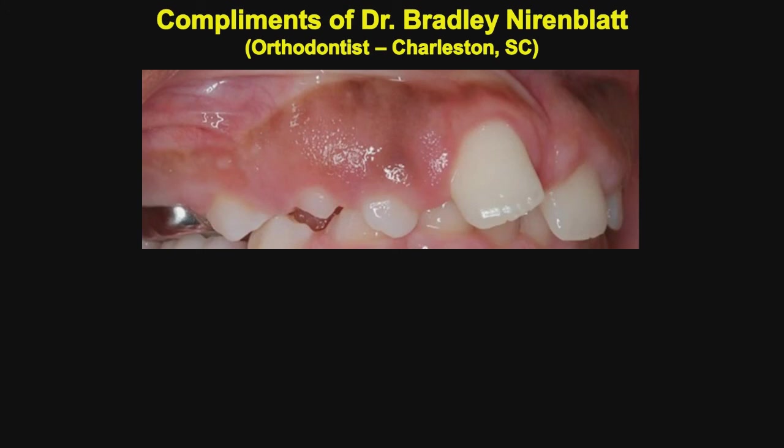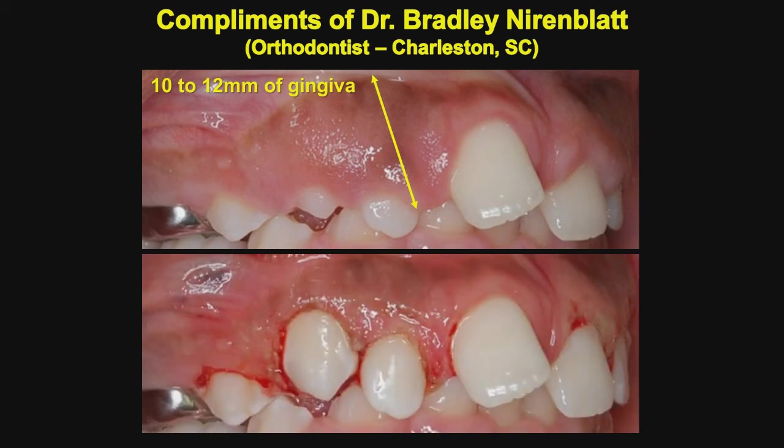Another case of Dr. Nirenblatt is this situation where you have 10mm to 12mm of gingiva, and by going in and using the radiosurgery, he can now place bands on these teeth. You want to have a minimum of 3mm of gingiva remaining, and these teeth can now easily be realigned orthodontically. Hopefully you can see the many uses of the radiosurgery unit, and now understand the difference between it and electrosurgery, and see how it compares very favorably with the soft tissue laser.